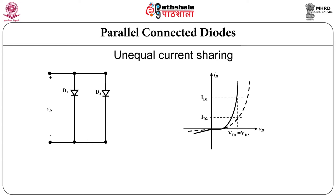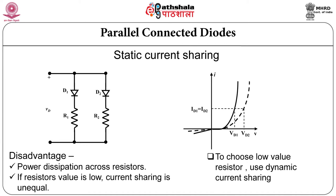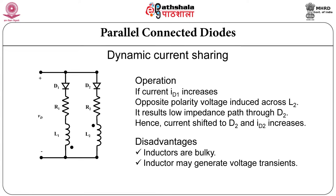If we want equal current sharing then we have to use resistors in series with each diode as shown in the figure. But this is also applicable only for static conditions — it will not be useful for dynamic conditions. In case of dynamic conditions you have to use a coupled reactor. Figure shows the coupled reactor — it means two inductors wound on the same core but with opposite phase.